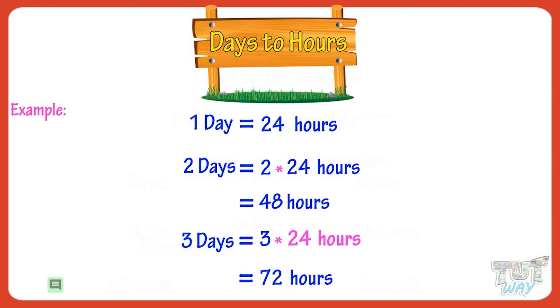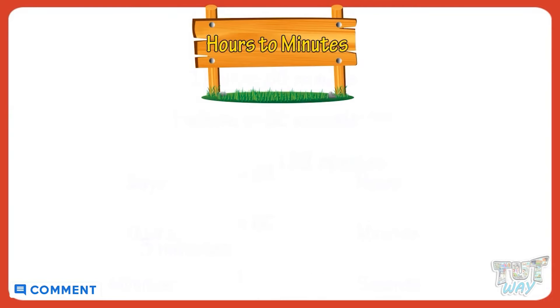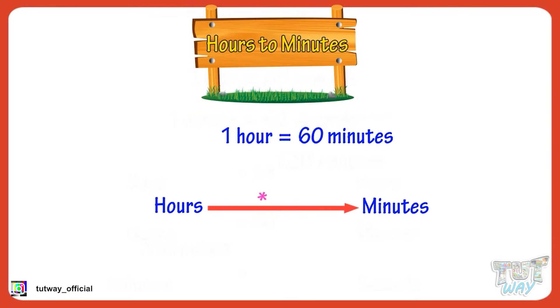Now let's learn how we can convert hours into minutes. Kids, there are 60 minutes in an hour. So to convert hours into minutes, we need to multiply hours with 60.